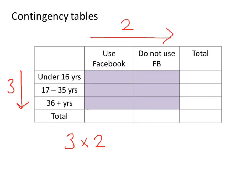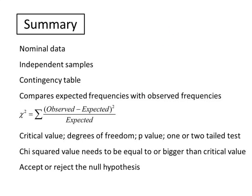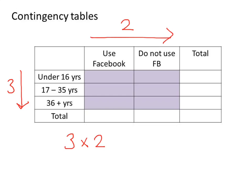Contingency tables don't have to be two-by-two. This one has three rows. So this one has three rows and two columns, so it's a three-by-two contingency table.